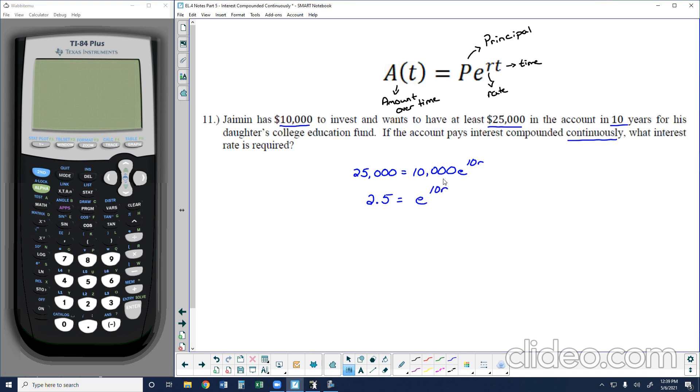Now my variable is an exponent of base E, which means I need to use a logarithm of base E to undo the operation and get the variable out. Logarithm base E is the natural log. So I'm going to take the natural log of both sides, leaving me with the natural log of 2.5 equals 10R. In this case, I can go ahead and get R by itself by dividing by 10. And this gives us the interest rate.